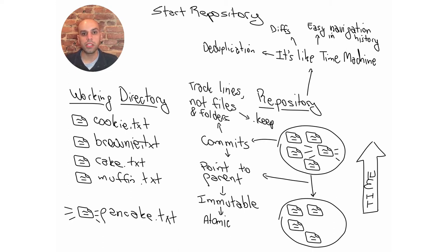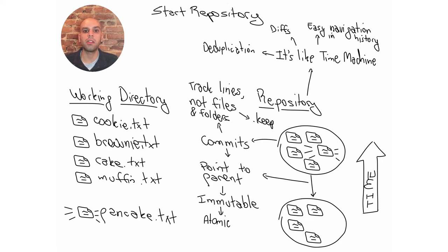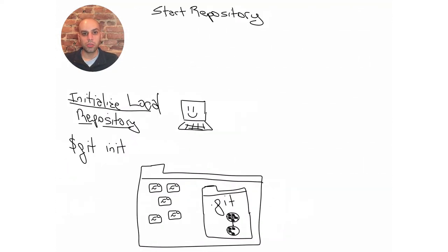Note that the concept Git tracks is lines. So, for example, if you want an empty directory to exist in the repository, you have to create a file. It may be empty, because an empty file still contains an empty line and Git is going to track that. The convention is to have this file named .keep or .gitkeep.